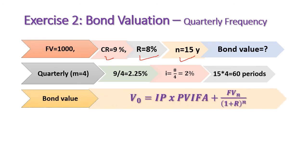Bond value is obtained by applying the discounted cash flow equation: multiply the interest payments by the present value interest factor for annuity to get the present value of all coupon payments promised to be received every three months over the next 15 years, then add the present value of the face value of 1,000 to be received after 60 periods.